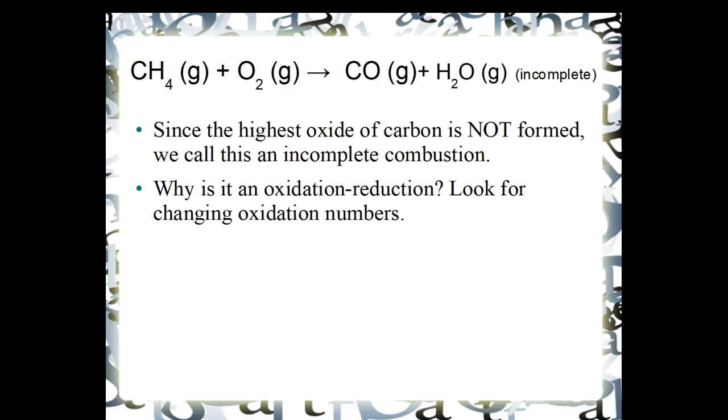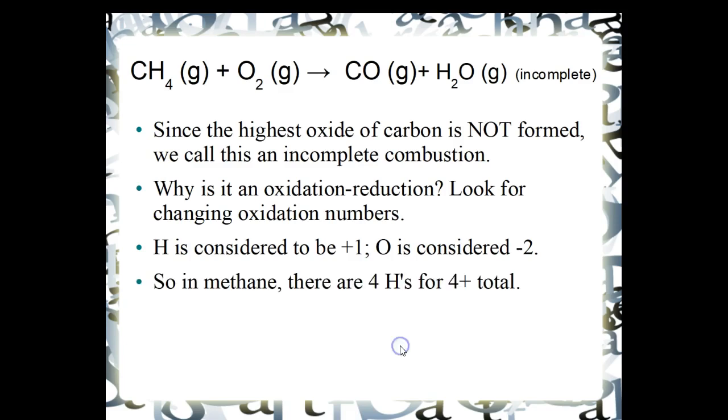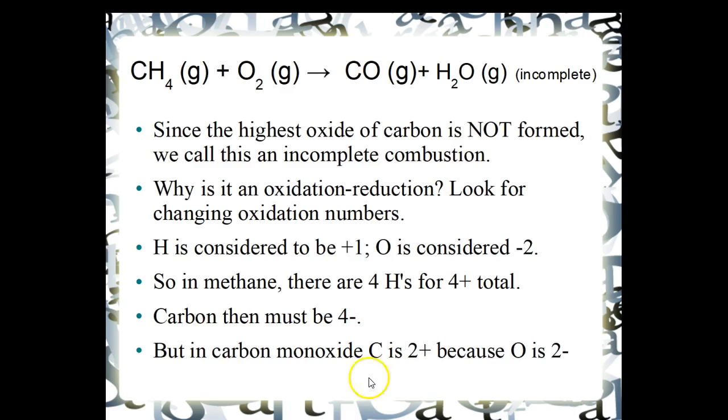Why is this an oxidation-reduction? We will again look at changing oxidation numbers. The hydrogen at plus one, the oxygen at minus two. So in methane, we've got the four hydrogens, that's a four plus. So the carbon must again be negative four. But in carbon monoxide, the carbon must be two plus because oxygen is two minus. We need to keep the carbon monoxide neutral in charge. Therefore, electrons are being moved and all combustion is once more oxidation-reduction.